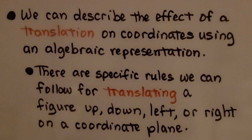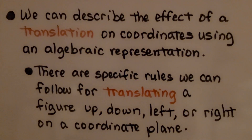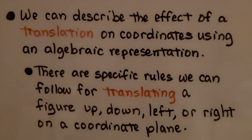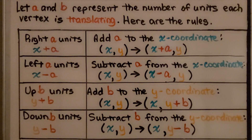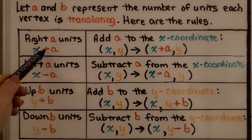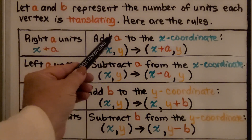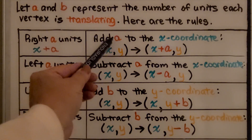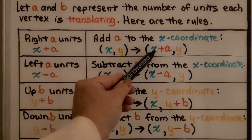We can describe the effect of a translation on coordinates using an algebraic representation. There are specific rules we can follow for translating a figure up, down, left, or right on a coordinate plane. We're going to let a and b represent the number of units each vertex is translating. If it's translating right some number a units, we would do x plus a — we add that number of units to the x coordinate.